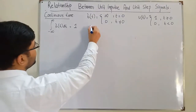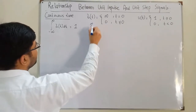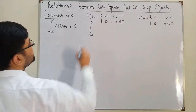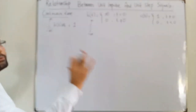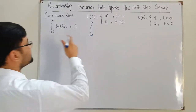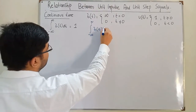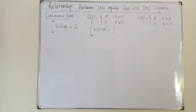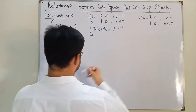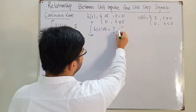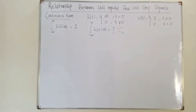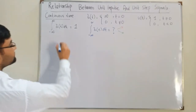Now consider integrating the impulse from negative infinity up to some finite constant value tau. What would be the value? This gives us two cases to consider.